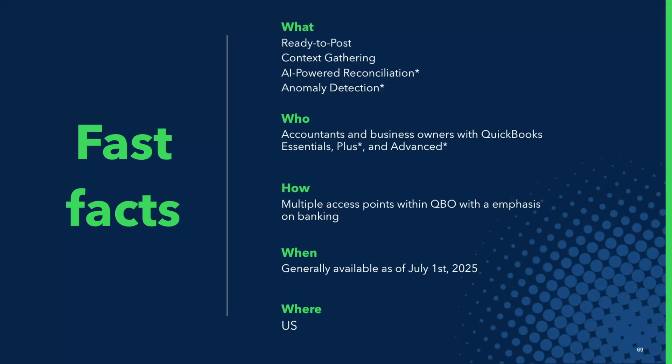The four key features are: ready to post for fast batch posting, context gathering to collect missing information, anomaly detection to help you catch outliers, and AI-powered reconciliation to ensure completeness. Ready to post and context gathering are in Essentials and up, while anomaly detection and reconciliation will be in Plus and Advanced. The US launch was on July 1st, and we've been building this with weekly input from our partner council accountants since last July.